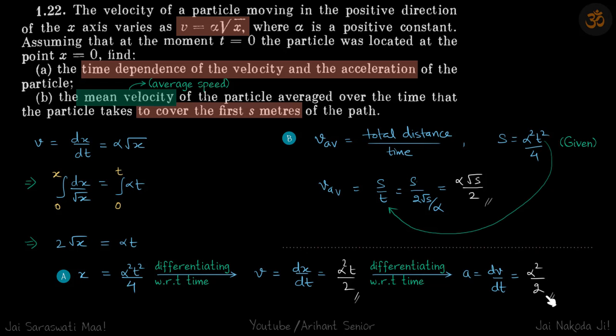Now average speed: it is total distance upon total time. Here, luckily the particle is not taking a u-turn, so total distance is same as total displacement. Why is it not taking a u-turn? You can see here...